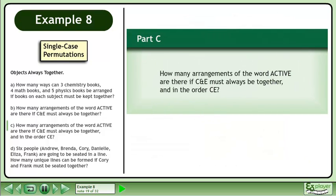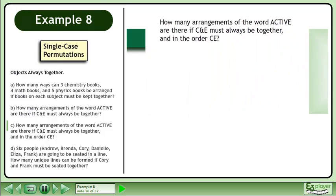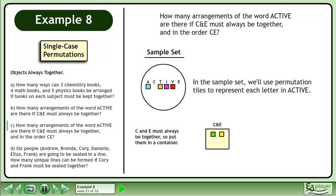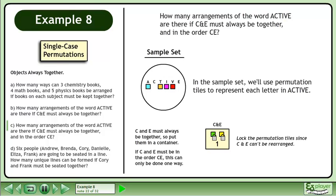Now we'll move on to Part C. How many arrangements of the word ACTIVE are there if C and E must always be together and in the order CE? In the sample set, we'll use permutation tiles to represent each letter in ACTIVE. C and E must always be together, so put them in a container. If C and E must be in the order CE, this can only be done one way.